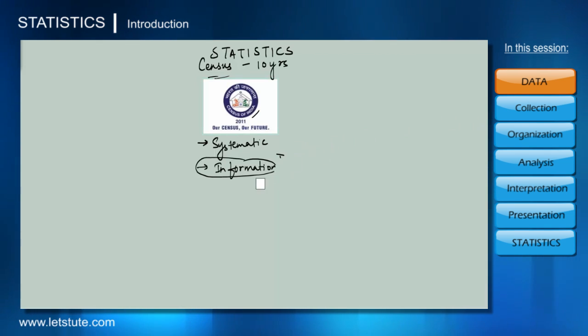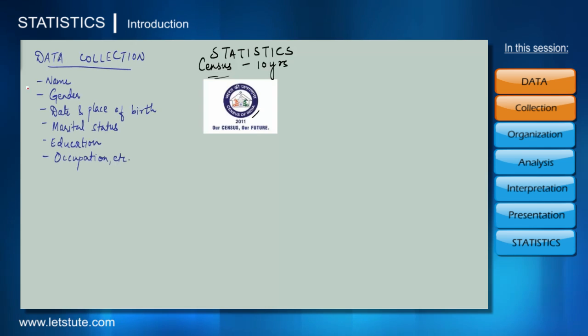Let us see what all happens when we are dealing with data in a census. Firstly, data collection is done over the whole population of a country and it comprises various details of every usual resident of the country like name, gender, place of birth, education, occupation, etc.